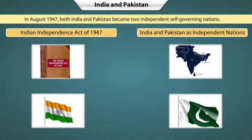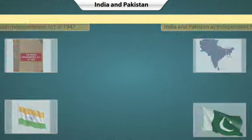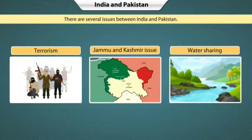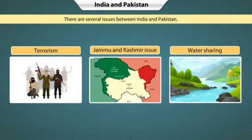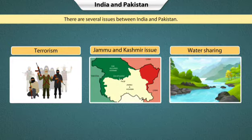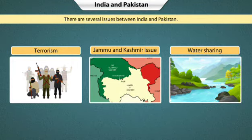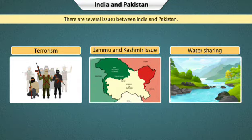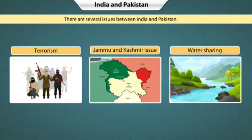The foreign relations between India and Pakistan started in 1947, the year in which both countries became independent nations. Though both countries wish to maintain cordial bilateral relations, there are several issues that have become hurdles. The first issue is terrorism, the second is Jammu and Kashmir, and the third is the dispute in sharing waters of rivers that flow between India and Pakistan.